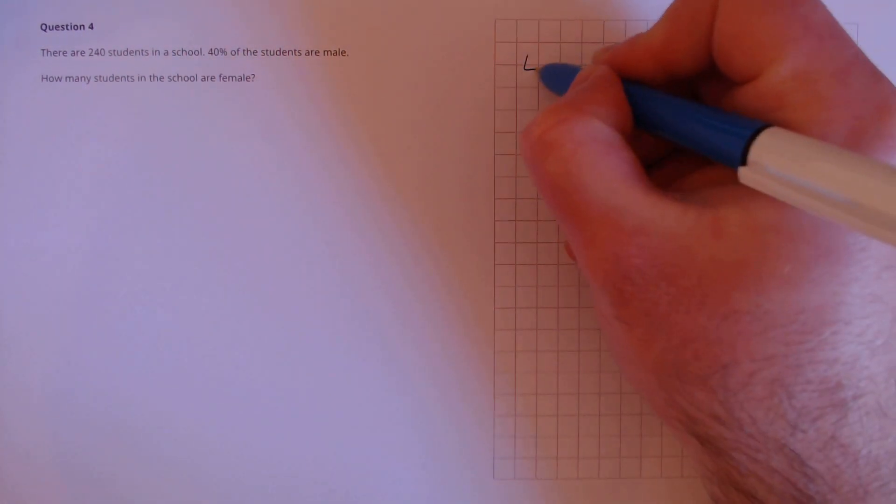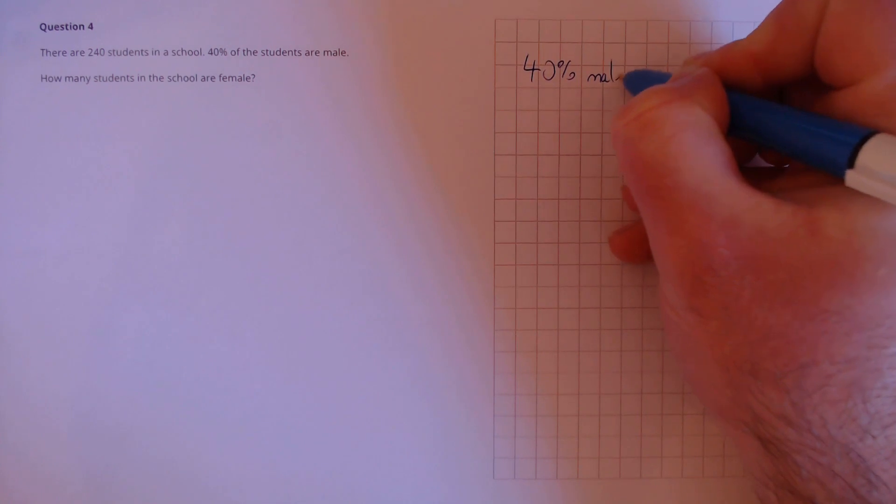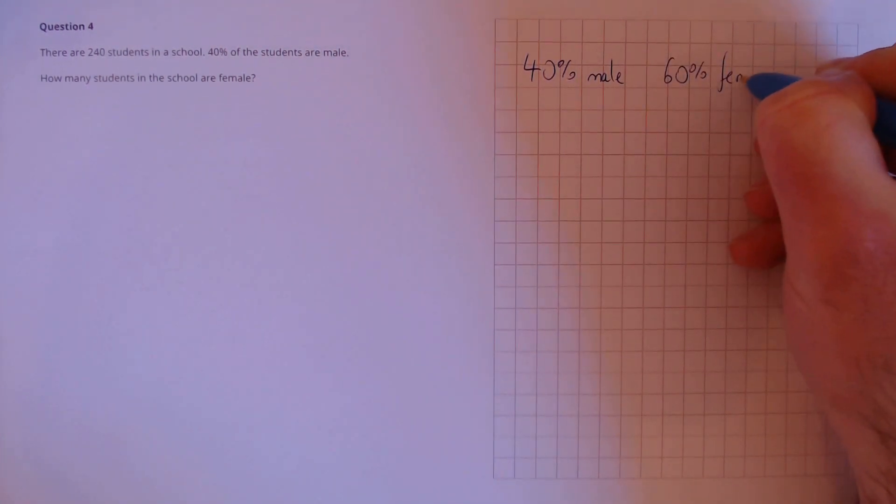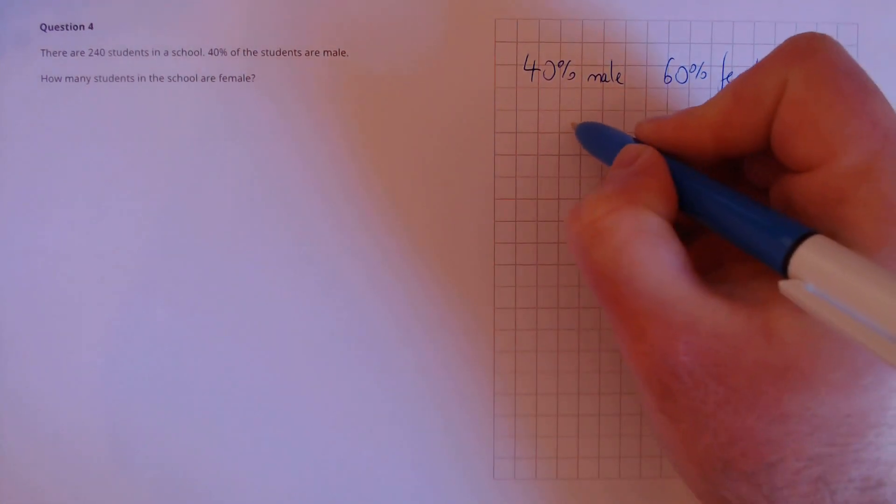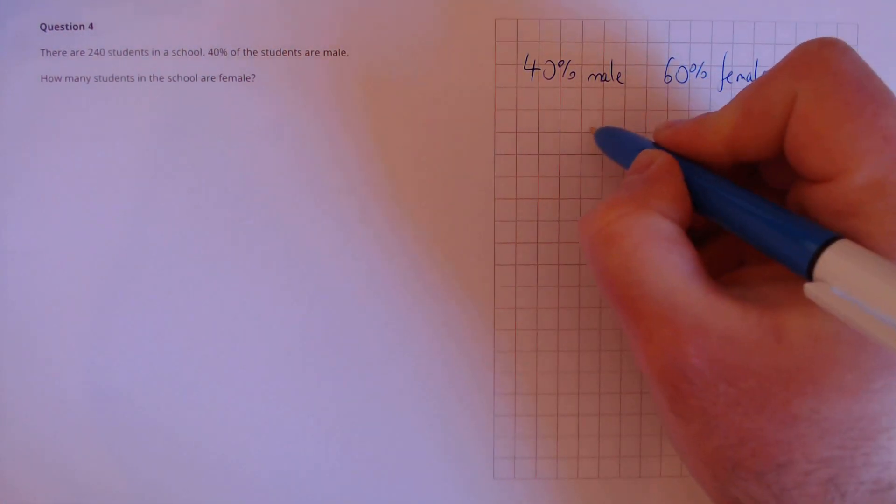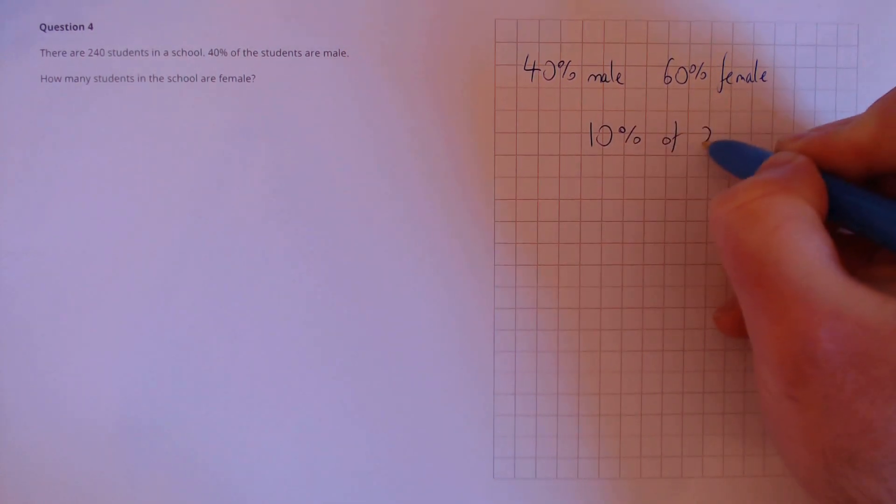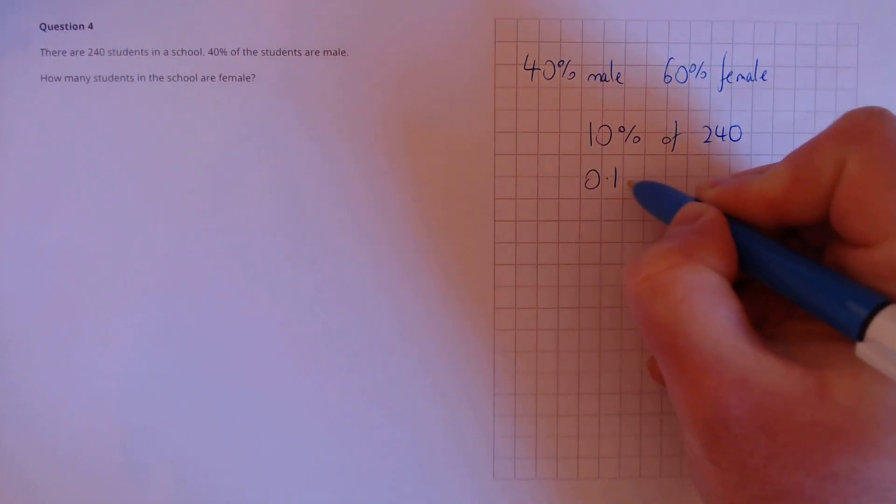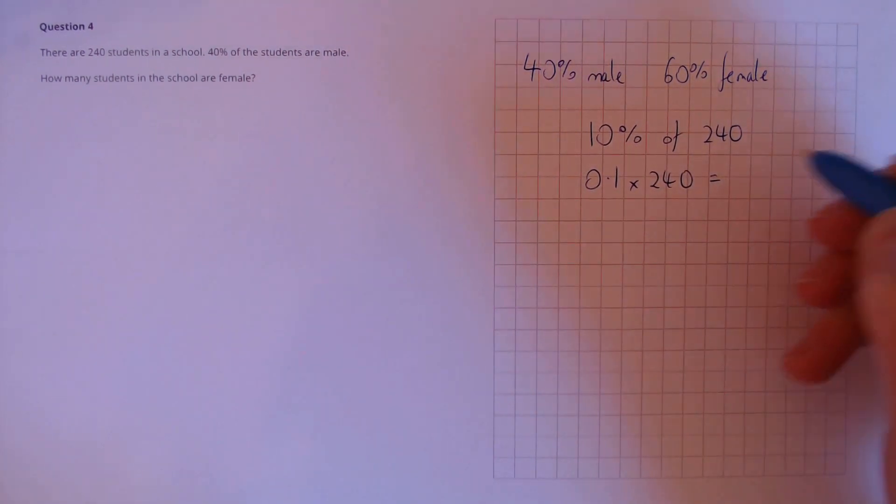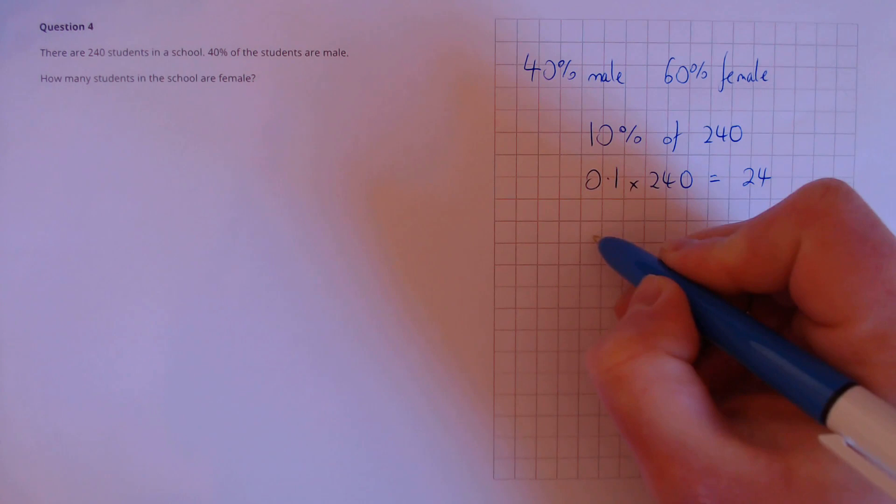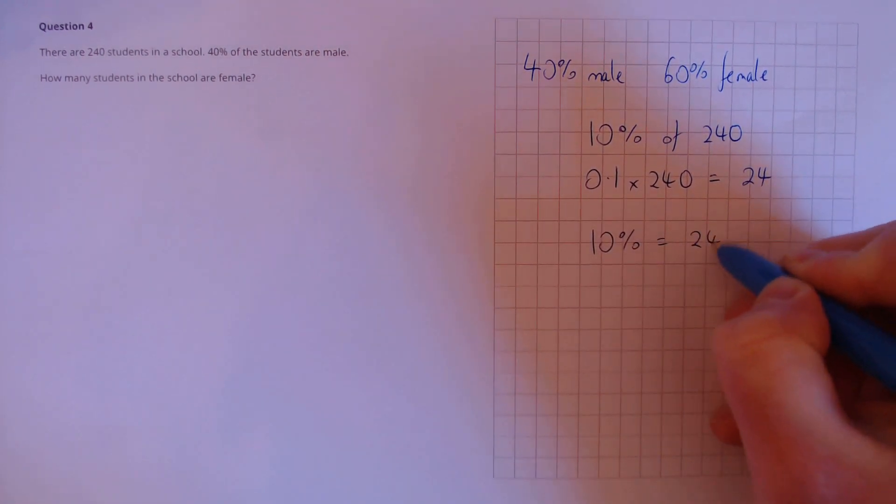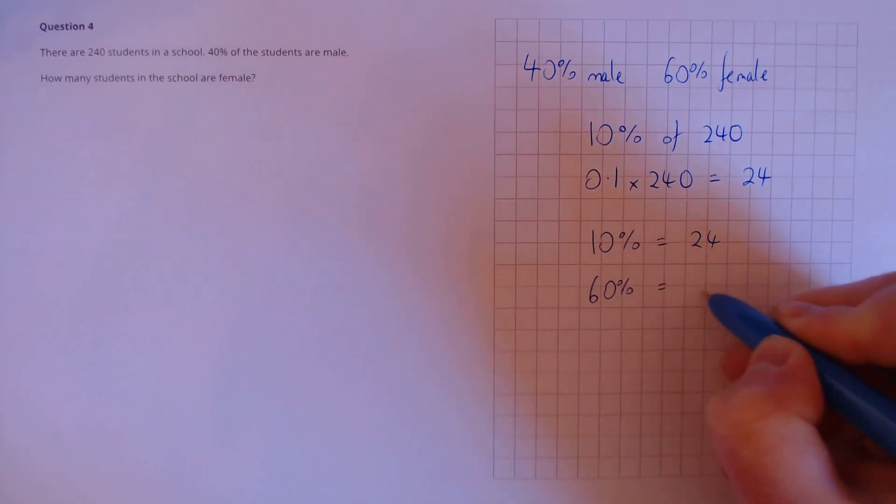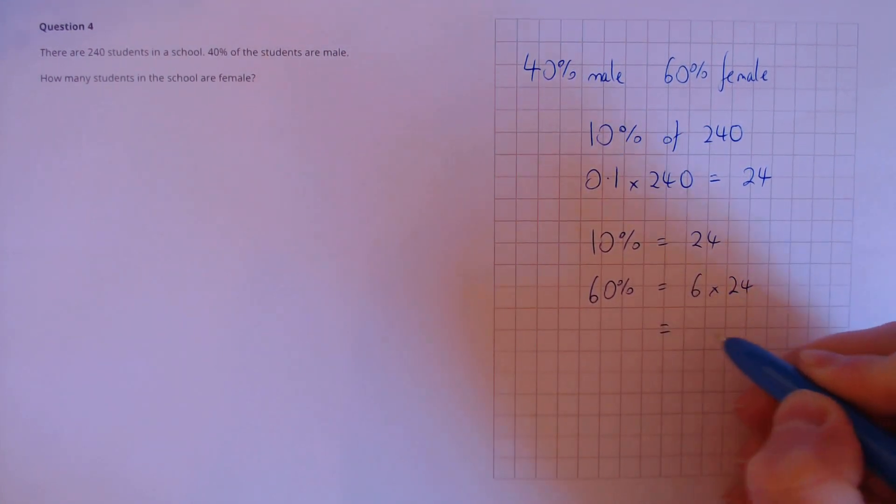Question 4: There are 240 students in a school. 40% of the students are male. How many students in the school are female? Well if 40% are male then that means the other 60% must be female because that's got to add up to 100%. If we want to calculate 60% of 240, an easy way to do that is to calculate 10% of 240 first. That's 0.1 times 240, or the same as dividing by 10. So that's 24. If 10% is 24 then 60% is 6 lots of 24, which equals 144 female students.